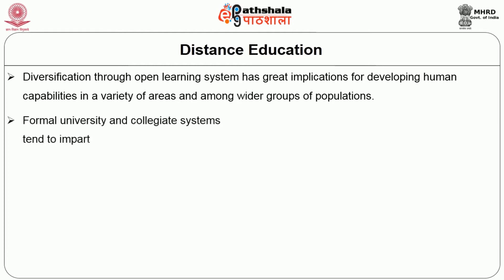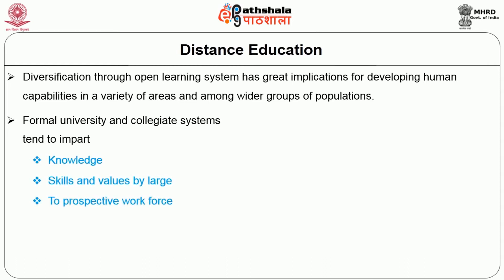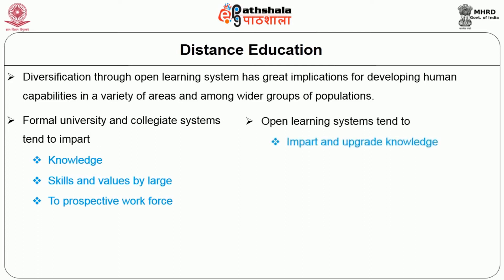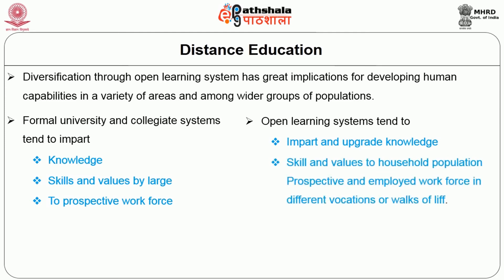The formal university and collegiate systems tend to impart knowledge, skills and values largely to prospective workforce, whereas open learning systems tend to impart and upgrade knowledge, skills and values to household populations, and prospective and employed workforce in different occasions or walks of life.